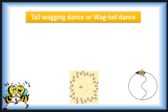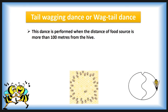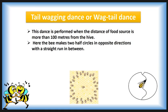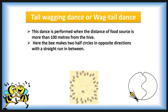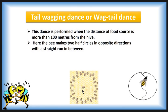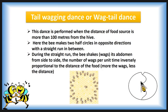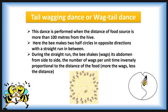The next dance is called the tail-wagging dance or wag-tail dance. It is performed when the distance of the food source is more than 100 metres from the hive. The bee makes two half circles in opposite directions with a straight run in between, vigorously shaking its abdomen during the straight run.